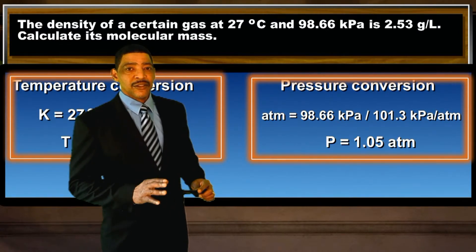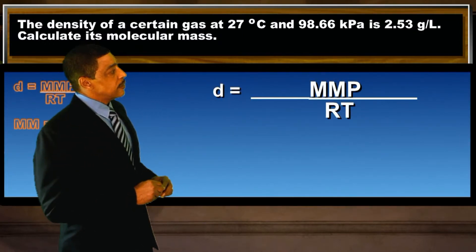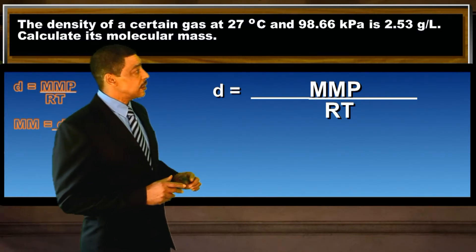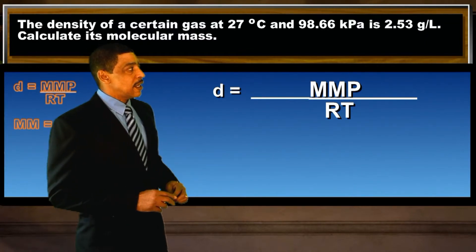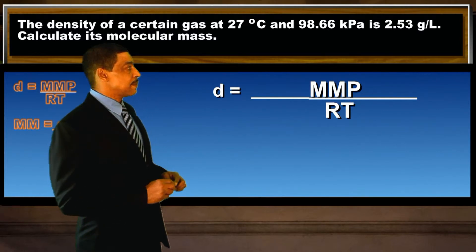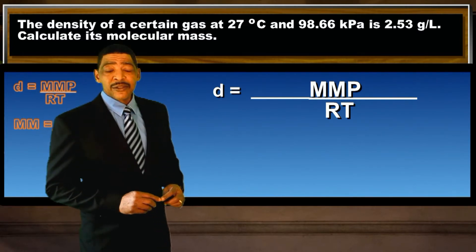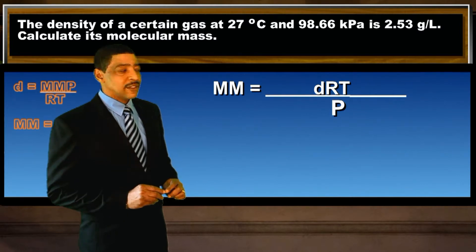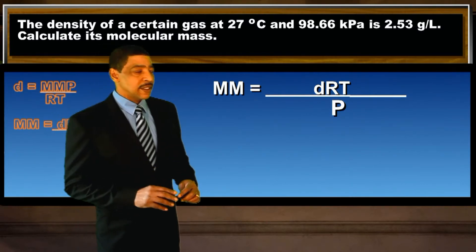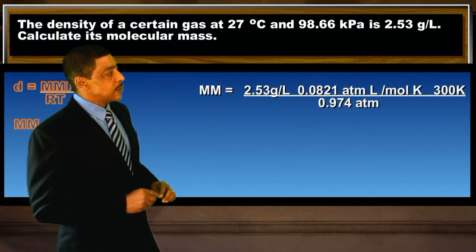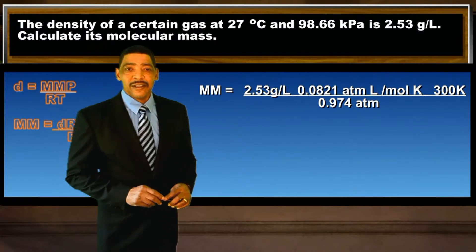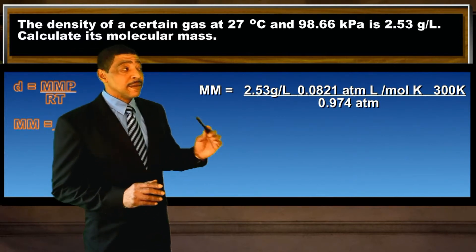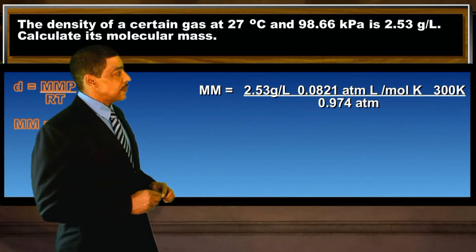Now we simply insert the information. The density, 2.53 grams per liter, is equal to molar mass times p (0.974 atmospheres) divided by r times t. Rearranging the equation to solve for molar mass: molar mass equals density times r times t divided by p. Inserting the data, molar mass equals 2.53 grams per liter times 0.0821 atmospheres times liters divided by moles times k, times 300K, divided by 0.97 atmospheres.